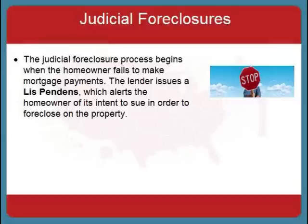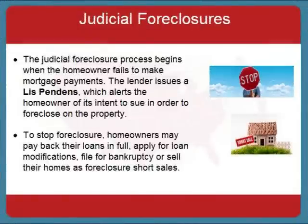The judicial foreclosure process begins when a homeowner defaults on the mortgage. The lender issues a lis pendens, which alerts the homeowner of the default and of the lender's intent to sue in order to foreclose on the house. Homeowners are given a period of time during which they can alleviate their defaults and stop foreclosure. The best way to stop foreclosure is to pay back the defaulted loan in full. If this is not an option, the homeowner may apply for loan modification, or if determined to keep the home at all costs, may file for bankruptcy. If all else fails, the homeowner may arrange with the lender to sell the home as a short sale.